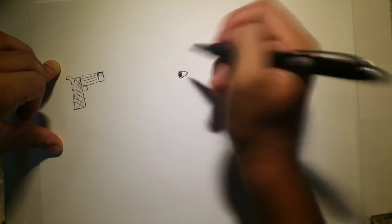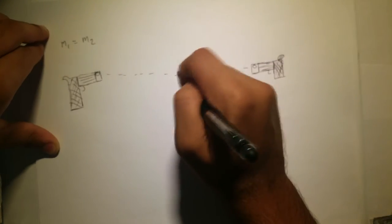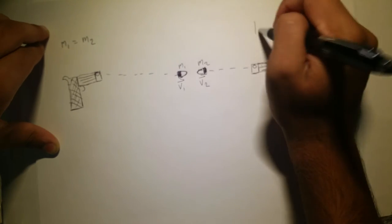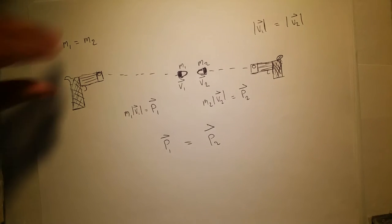When two objects with the exact same mass and the exact same velocity, that is, the exact same momentum, collide, the momentum doesn't just disappear. It is actually transferred from one object to the other.